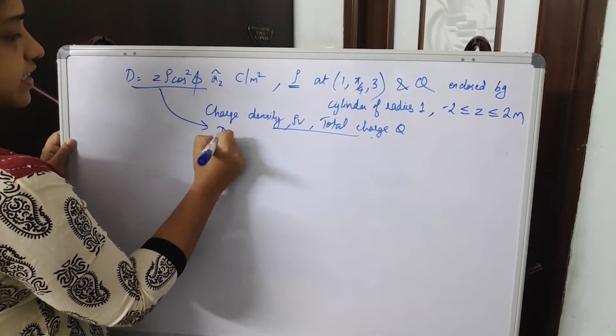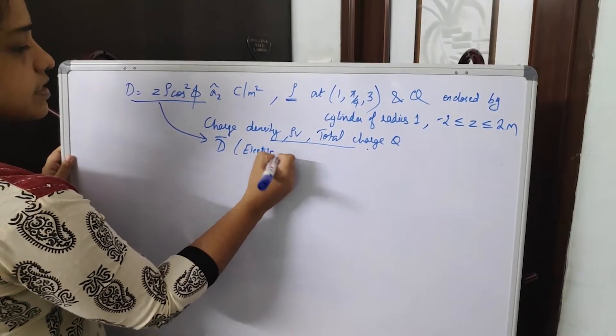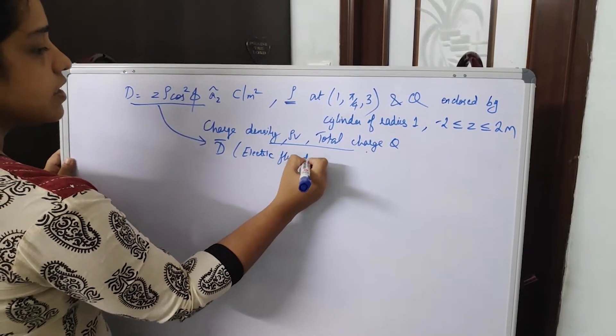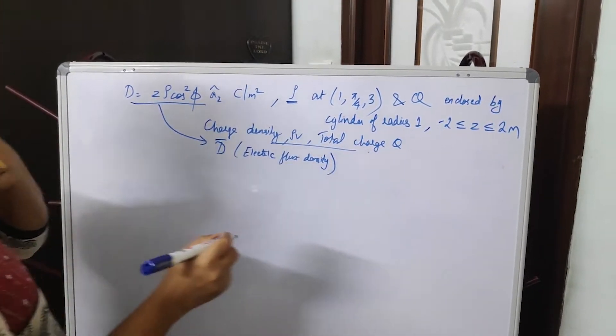Given value is vector D. What is vector D? It is electric flux density. So what is the equation connecting vector D, rho V, Q, etcetera?